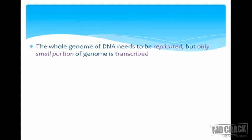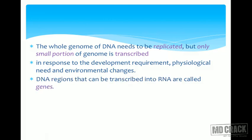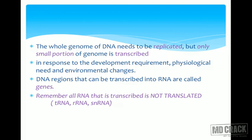Regarding prerequisites for transcription: although the whole genome is replicated, only a small portion is transcribed. What regulates which portion is transcribed? We will discuss gene regulation later, but generally it is in response to developmental requirements, physiological needs, or environmental changes. The DNA regions that can be transcribed into RNA are called genes. Importantly, not all RNA that is transcribed is translated — for example, tRNA and rRNA are transcribed but not translated. Only mRNA undergoes translation.